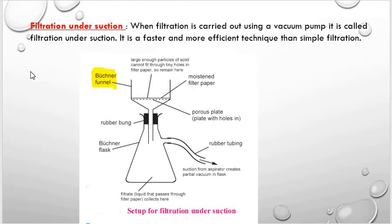Filtration under suction: when filtration is carried out using a vacuum pump, it is called filtration under suction. It is a faster and more efficient technique than simple filtration. The assembly consists of a thick-walled conical flask with a side arm. The flask is connected to a safety bottle by a rubber tube through the side arm. The safety bottle is used to prevent the filtrate from being sucked into the suction pump.